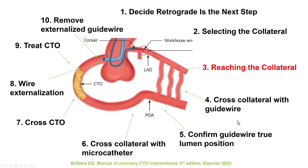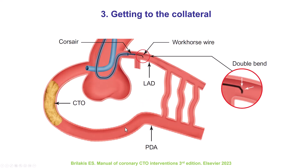The third step is to get a guidewire and a microcatheter into the collateral vessel. This is typically done by advancing a guidewire — a workhorse in most cases — into the collateral. We don't want aggressive guidewires to avoid injury of the proximal vessel. We also want to make sure there is no significant disease in the donor vessel proximal to the takeoff of the collateral, because if there is, this is probably best treated first before going retrograde to minimize the risk of ischemia.